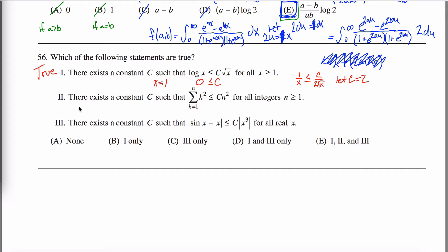What about the second statement? There exists a constant c such that the sum from k equals one to n of k squared is less than or equal to c times n squared. That is a false statement.